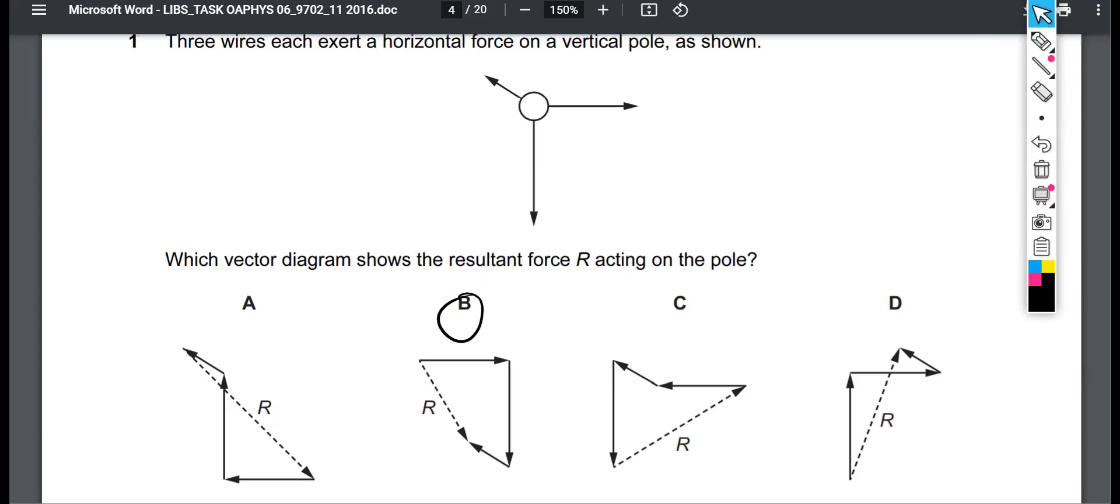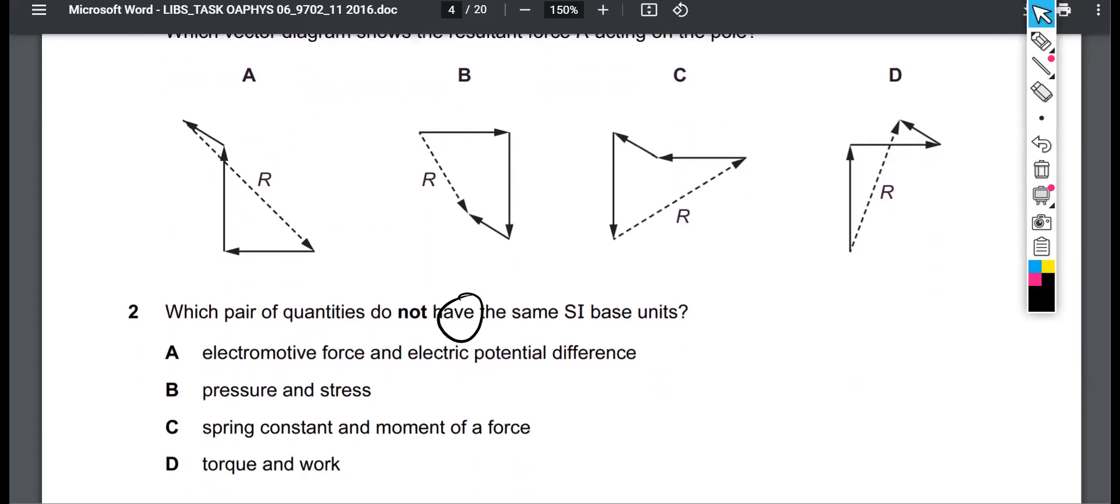All right. We're just going to keep on working through this paper here. We're going to look at a base unit type calculation. It says, which pair of quantities do not have the same SI base unit?